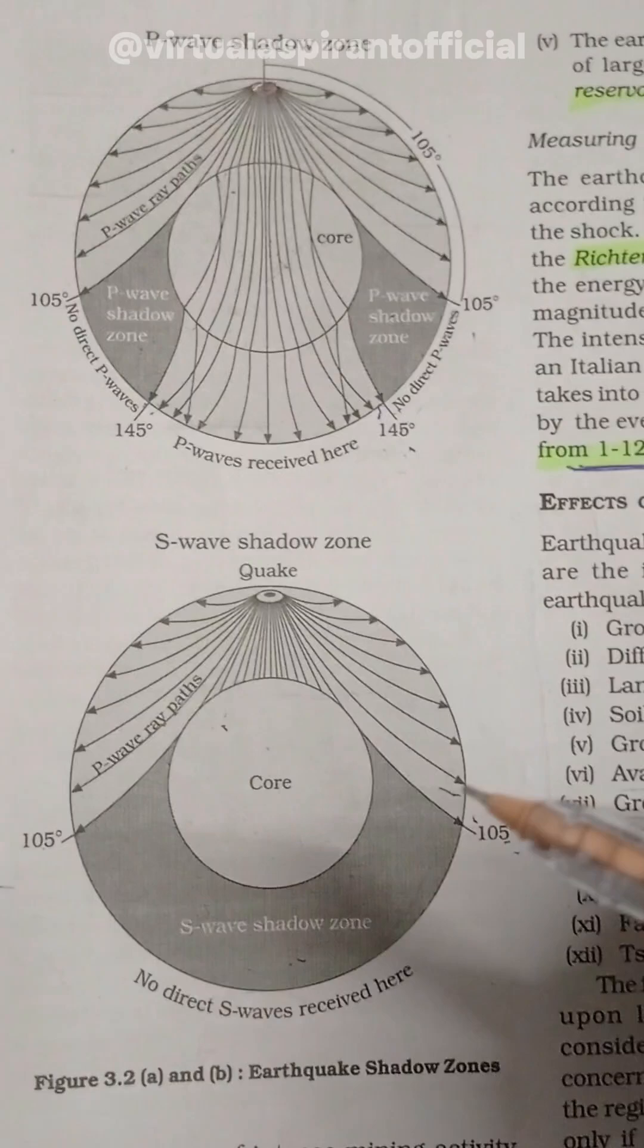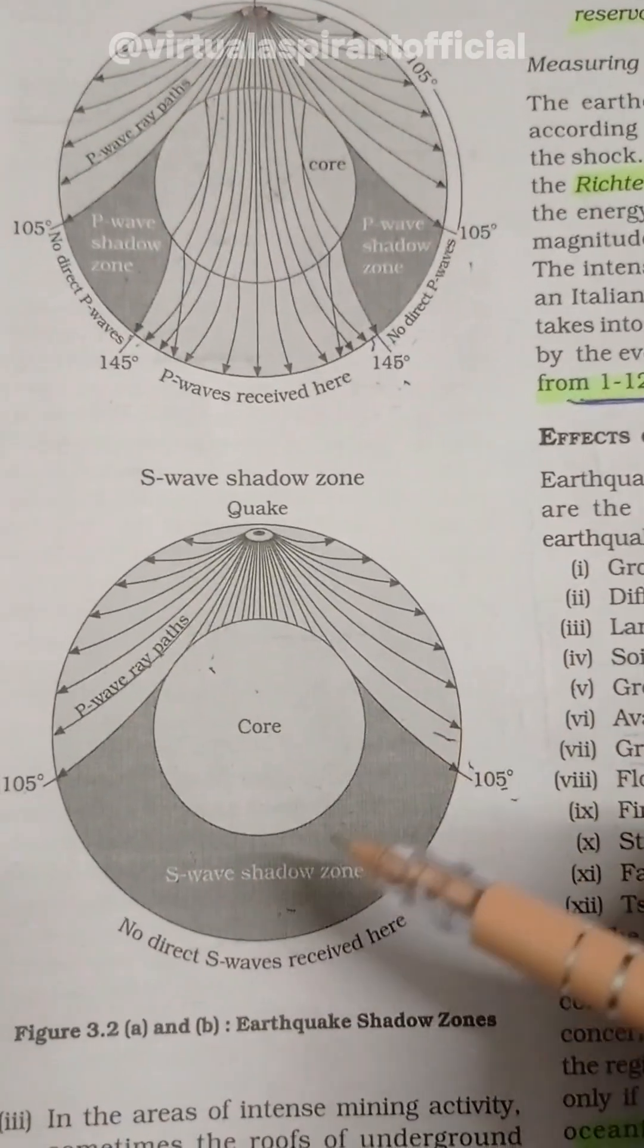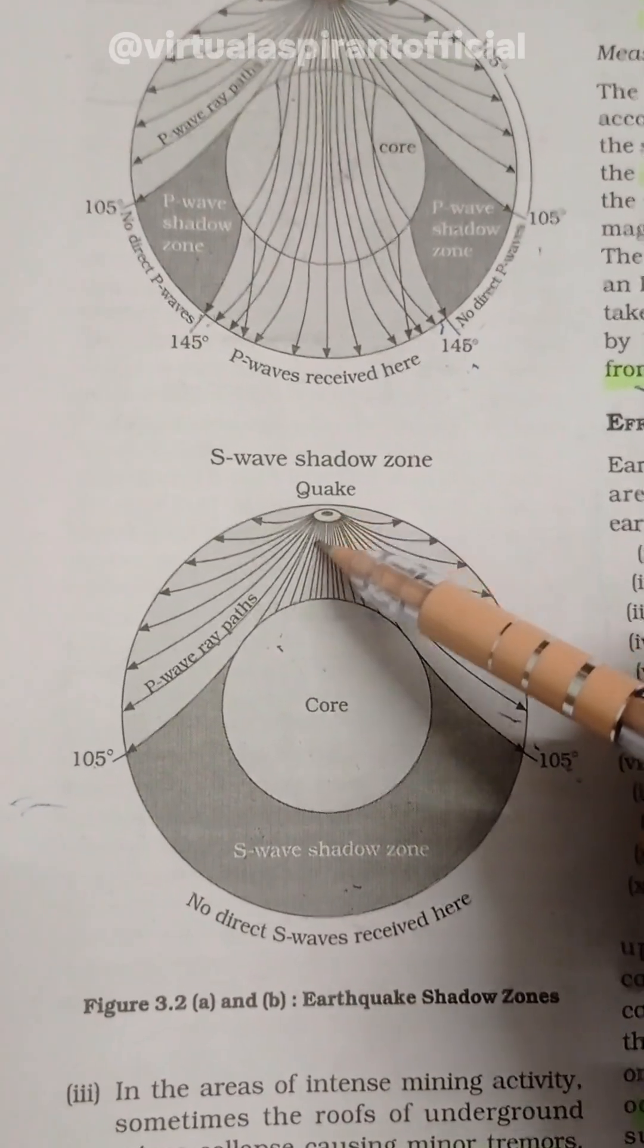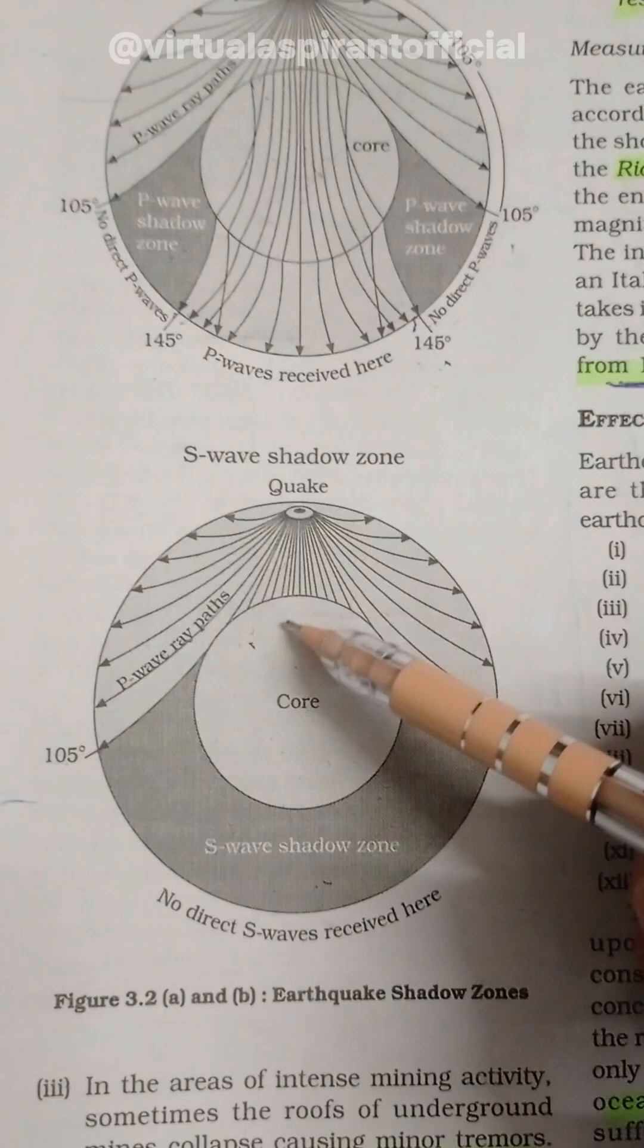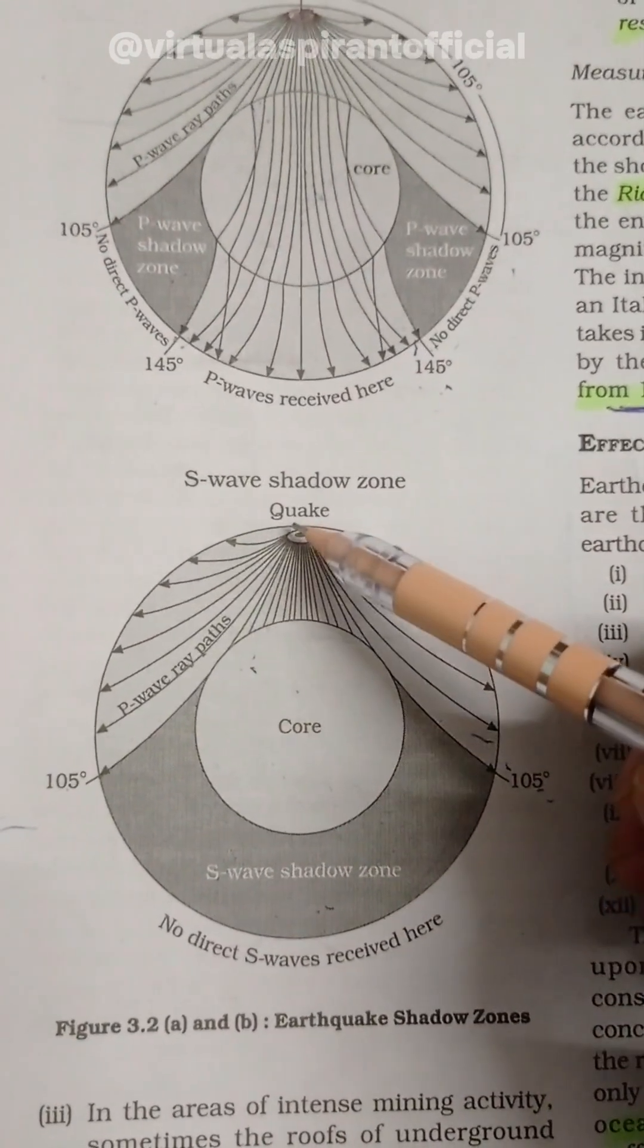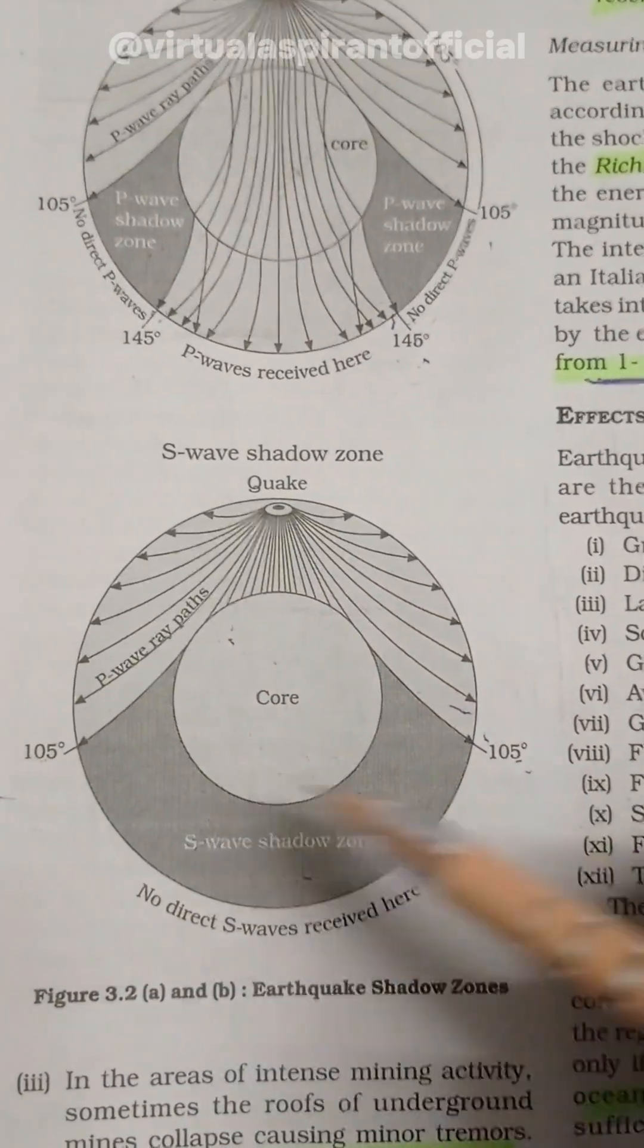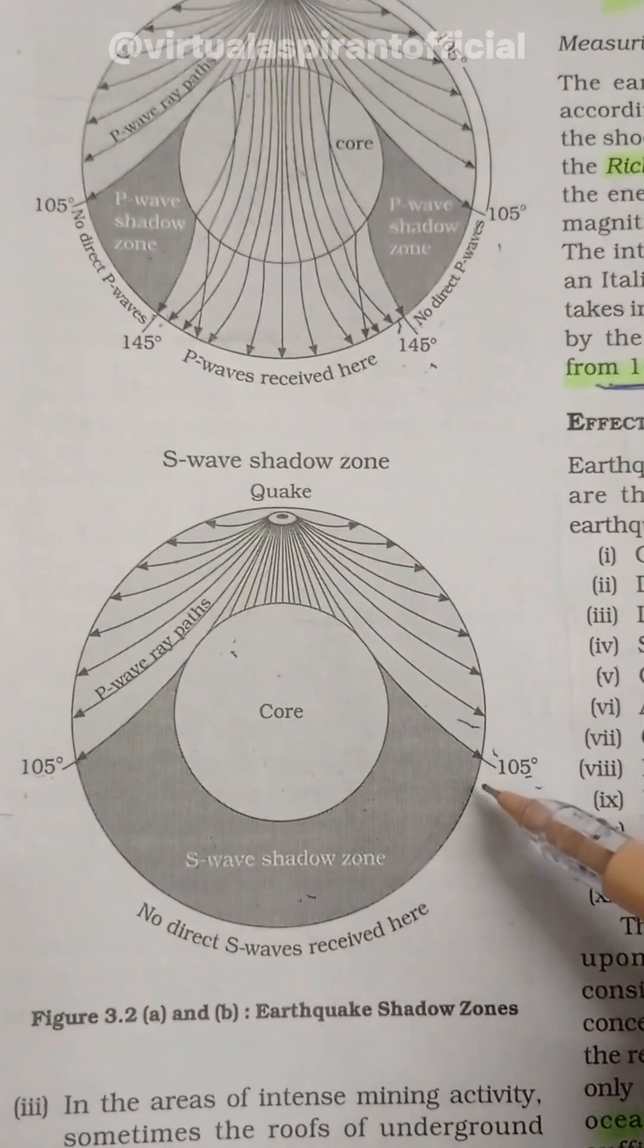How the S wave behaves inside the earth's surface. So whenever an earthquake occurs from the focus, the rays start to travel inside the body of the earth. So the S wave travels like this. The widest distance it can penetrate is 105 degrees.